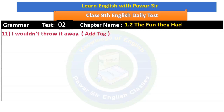Now, the sentence has a negative meaning. For a question tag on a negative sentence, we need to make it positive. So let us see how the question tag is formed. 'I wouldn't throw it away' — the question tag becomes 'Would I?'